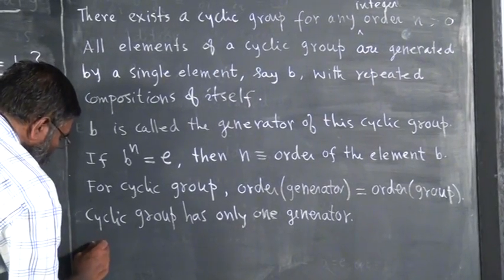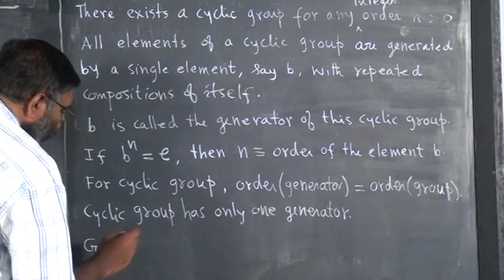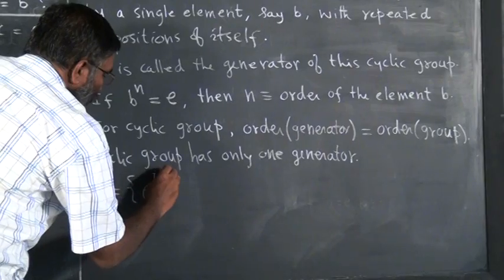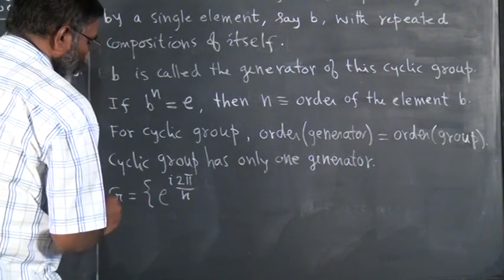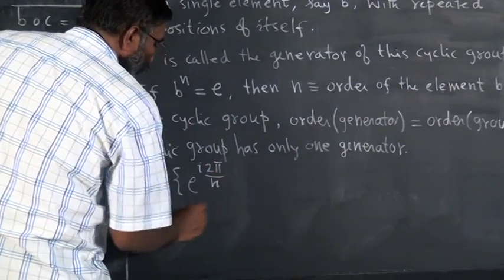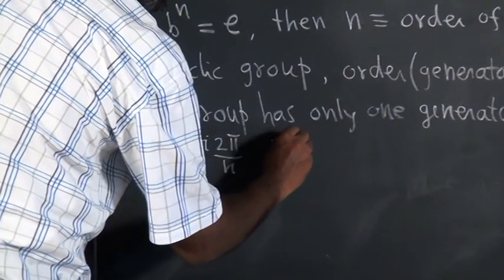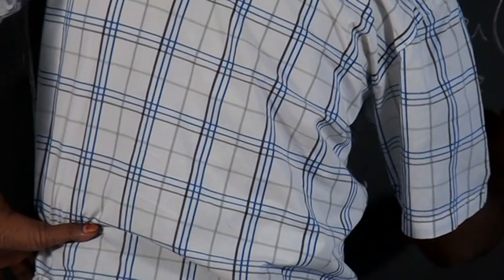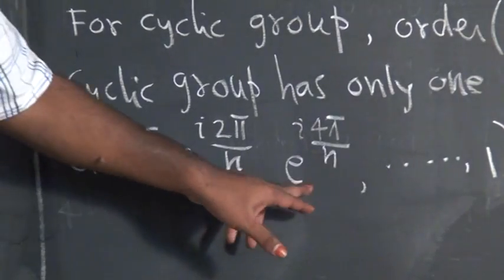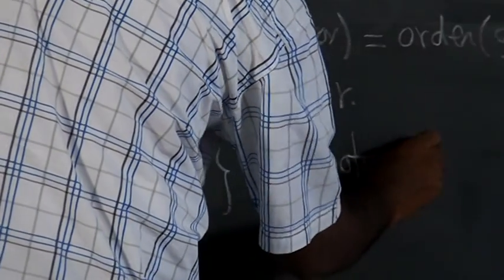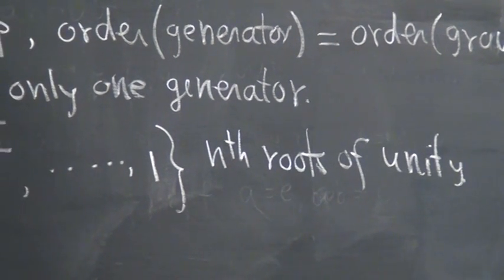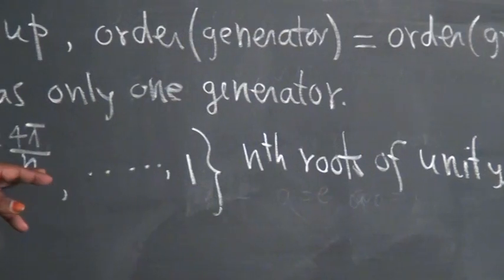For example, if you consider G to be the nth roots of unity — that is e to the power i 2π/n — so e^(i2π/n), e^(i4π/n) and so on up to 1. The last one is 1. If you take this nth roots of unity and use just multiplication as your binary operation — binary operation is simply multiplication of complex numbers.